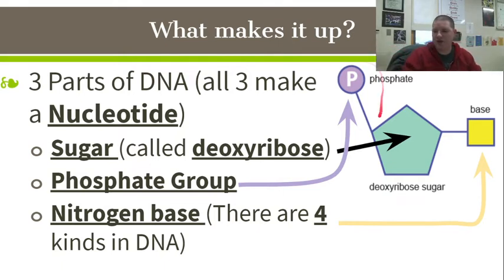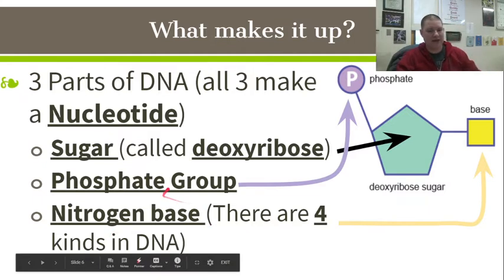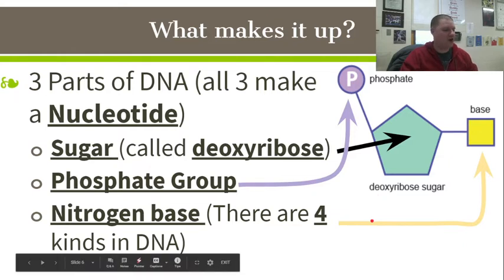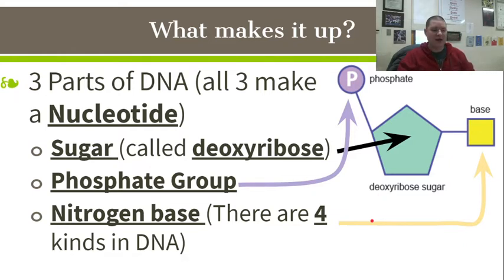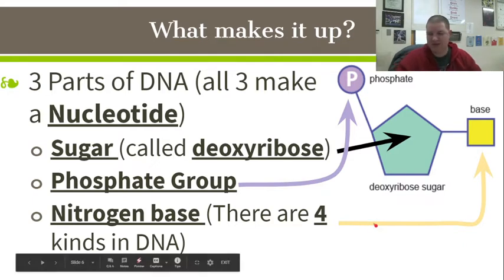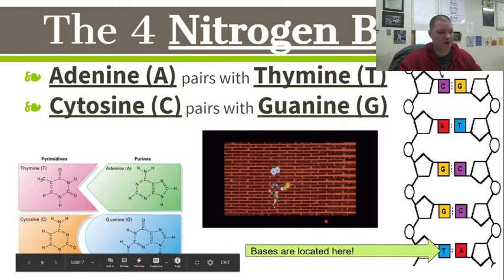Finally, we have what is known as a nitrogen base, which is essentially the code for your DNA — it has all your traits and everything. It's how these nitrogen bases are lined up, how many there are, and what order they come in. This is what we're going to focus on the most, because this is where all the information is stored — inside those nitrogen bases and their order. There are four kinds of them in DNA.